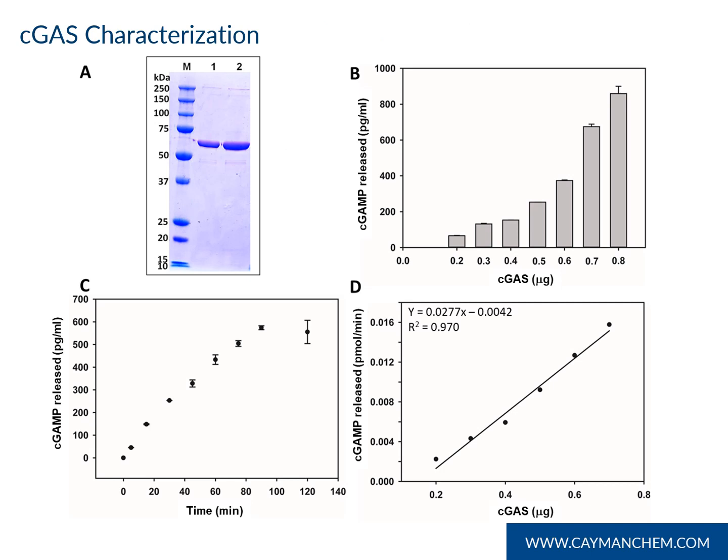C-GAS characterization. Figure A shows purified full-length human recombinant C-GAS expressed in E. coli, with a 2 microgram load in lane 1 and a 4 microgram load in lane 2. Figure B shows cGAMP produced with increasing quantities of C-GAS enzyme at a 30-minute time point. Figure C shows increasing cGAMP production over time using 0.5 micromolar C-GAS. Figure D shows the rate of cGAMP production versus the quantity of C-GAS added.